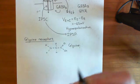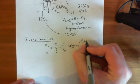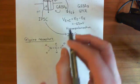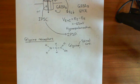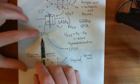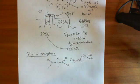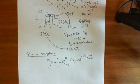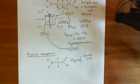Glycine is the inhibitory neurotransmitter used in the spinal cord — so GABA in the brain, glycine in the spinal cord. Glycine has its own cis-loop ligand-gated ion channel receptors. When glycine binds, it causes the channel to open, and glycine receptors are also permeable to chloride. So glycine causes an inhibitory postsynaptic current, which causes hyperpolarization of the postsynaptic membrane — an inhibitory postsynaptic potential — making the postsynaptic neuron less likely to fire. We've now seen four examples of cis-loop ligand-gated ion channels: the nicotinic acetylcholine receptor, 5-HT3 receptors, GABA-A receptors, and glycine receptors.